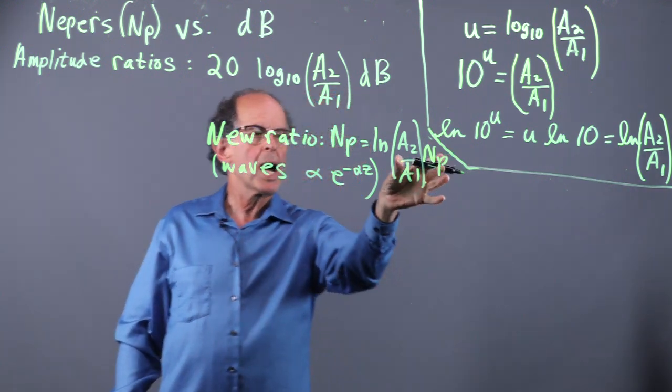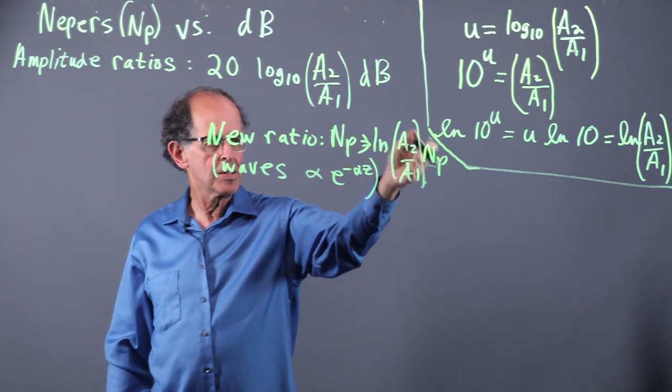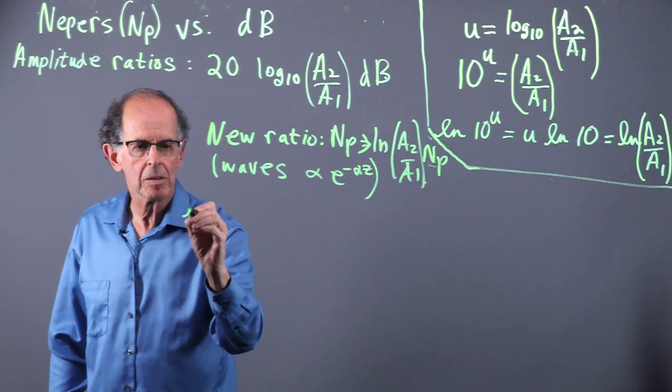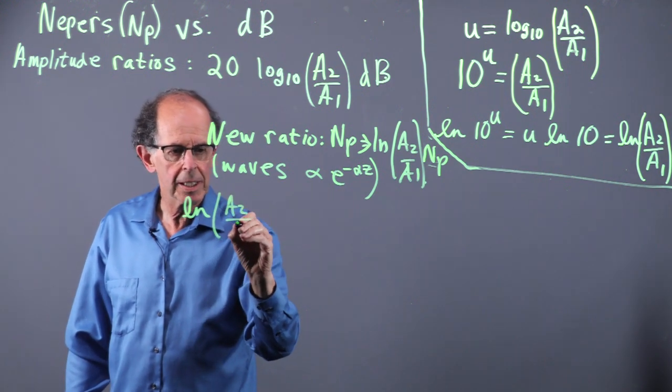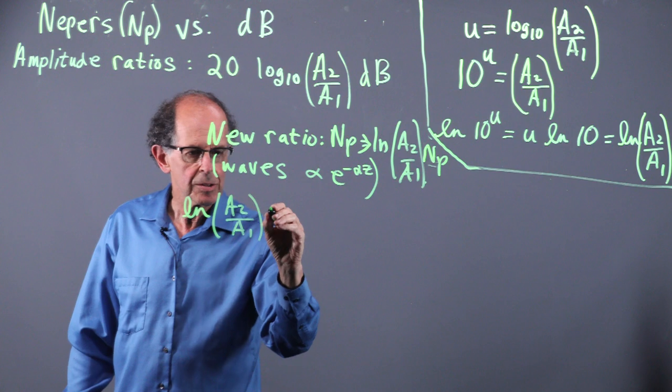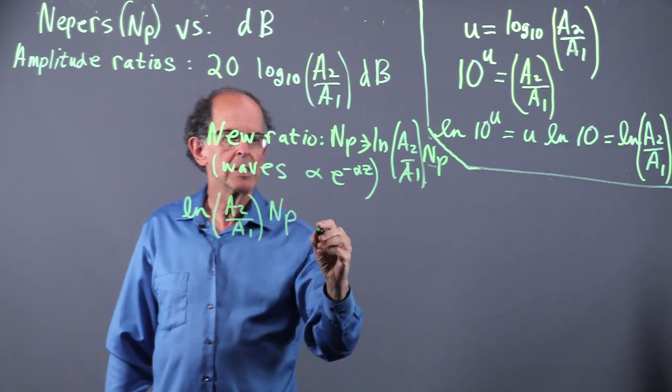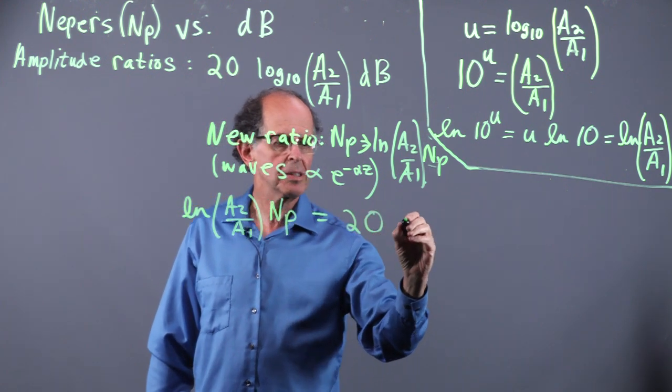So how are these units, this quantity here, which measures the ratio, so let's write it down, log of A2 over A1 times NIPRs, that's the number of NIPRs, is equal to the same ratio expressed in dB.